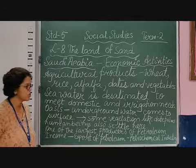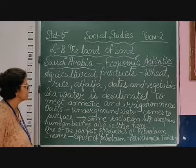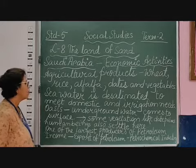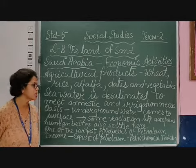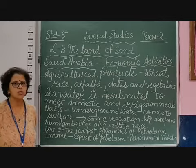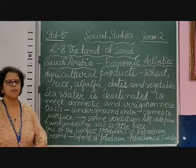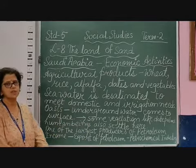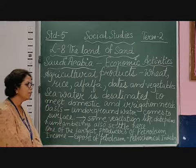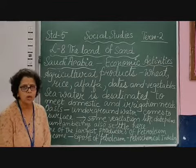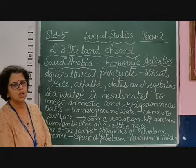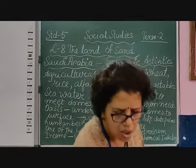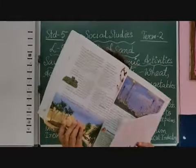Oasis, as we discussed, is where underground water comes out to the surface. It is a very small area where underground water comes through the surface, and people are able to grow some crops and natural vegetation is there. So you find palm trees and date trees over there. There is a picture given in your textbook as well.